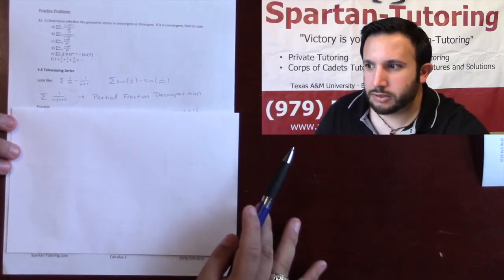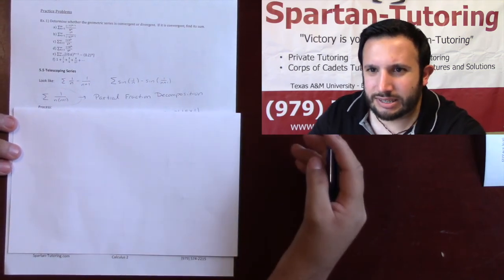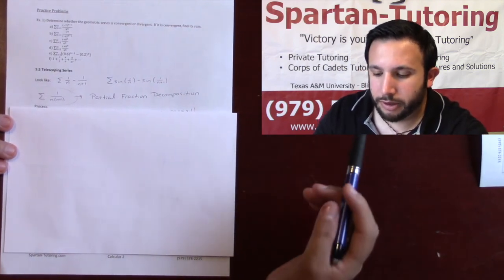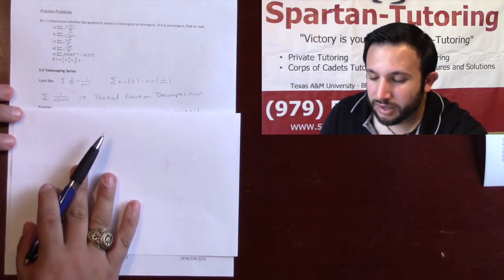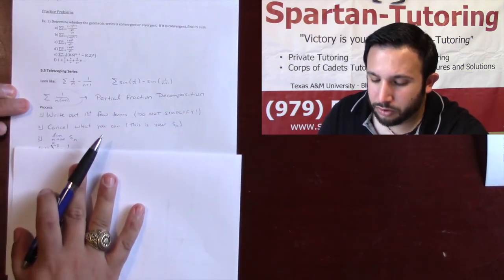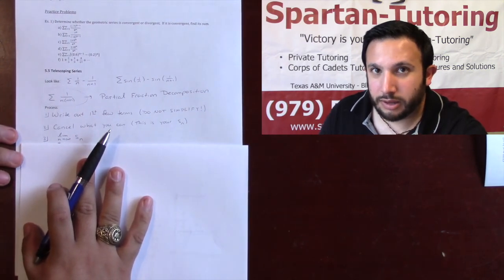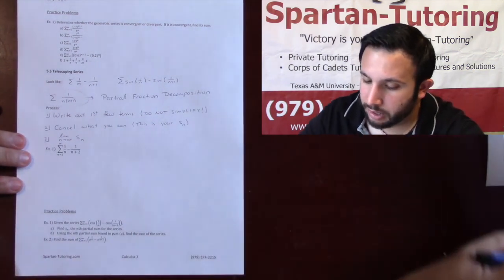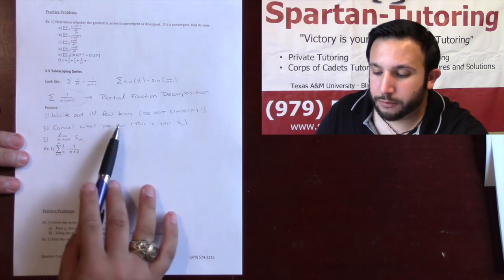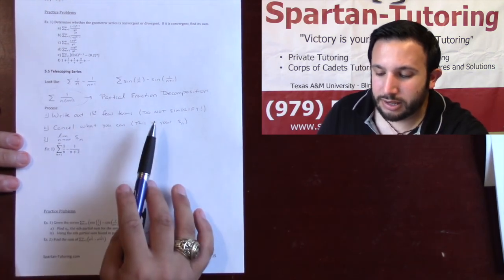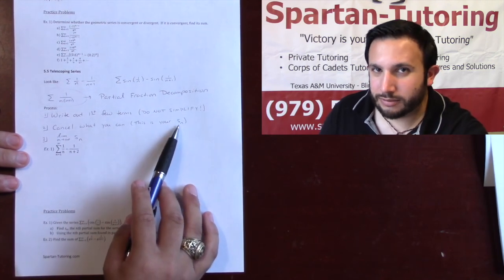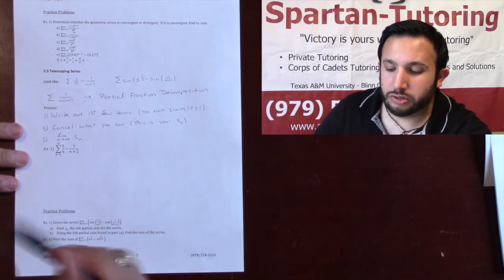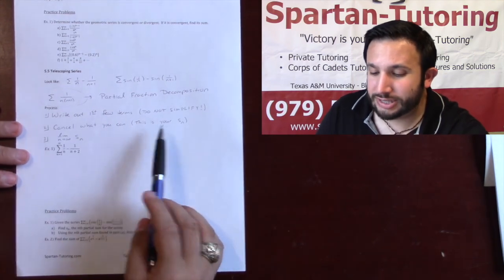Now these will be the easy partial fractions, kind of like the one we did in that first easy example. That's what you should expect to see for partial fractions. It's not going to get that hard, but make sure you don't forget how to do partial fractions. Now let's talk about this process. Go ahead, pause the video real quick and jot this down so that we can talk about it. The first thing you're going to do when dealing with telescoping series is write out the first few terms, but the big key thing here is do not simplify.